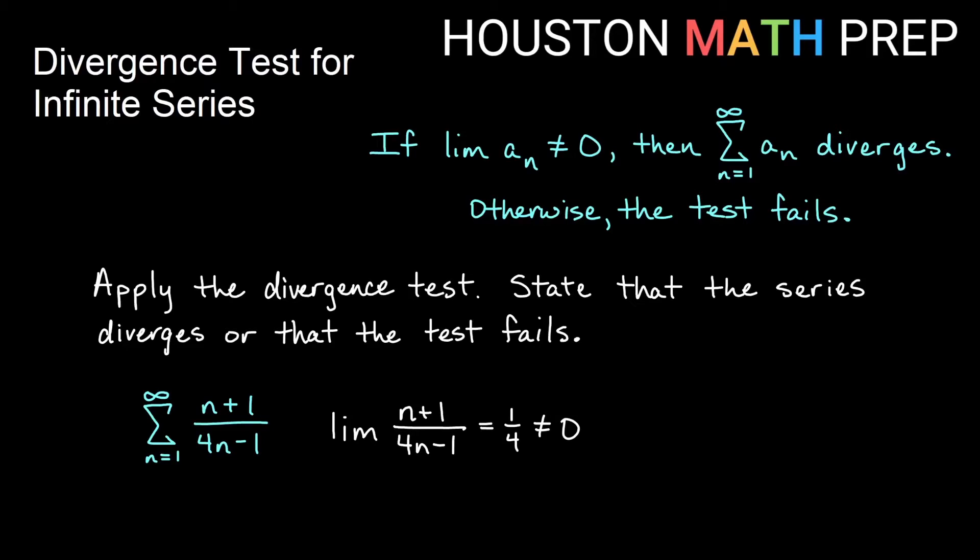Since the limit is 1 fourth and that limit is not zero, then we know that the sum will diverge. Eventually we're getting terms that are close to 1 fourth and adding something close to 1 fourth forever means that we will diverge eventually. So this actually diverges by the divergence test.